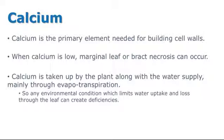Calcium is the primary element used for building cell walls. When calcium is low, marginal leaf or brack necrosis can occur. This can occur because calcium is taken up by the plant along with water, mainly through evapotranspiration. Any environmental conditions that limit water uptake and water loss through the leaves can also create deficiencies. We will be discussing recognizing calcium deficiency symptoms and management steps to avoid problems in this video.